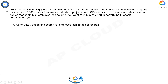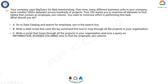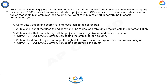A. Go to Data Catalog and search for employee_ssn in the search box. B. Write a shell script that uses the BQ command line tool to loop through all the projects in your organization. C. Write a script that loops through all the projects in your organization and runs a query on information_schema.columns view to find the employee_ssn column. D. Write a Cloud Dataflow job that loops through all the projects in your organization and runs a query on information_schema.columns view to find the employee_ssn column.